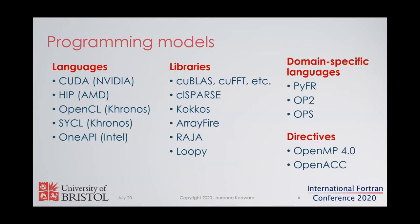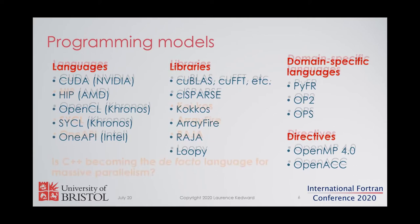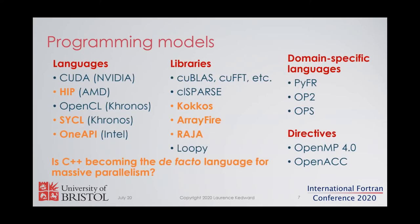There are many approaches for programming GPUs, usually falling into one of four categories: languages, domain-specific languages, libraries, or directives. I want to highlight how many of these approaches are now exclusively C++ or C++-based, partly because of the abstractions you can construct in C++. With that said, it's my opinion that Fortran is actually a better suited language for this kind of task, mainly because the abstraction is a part of the language itself.